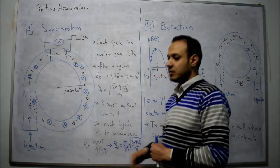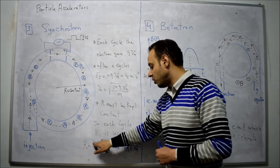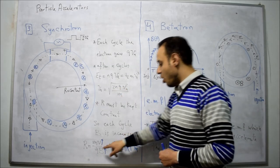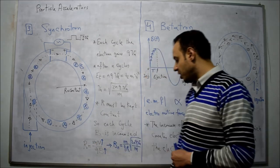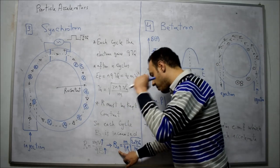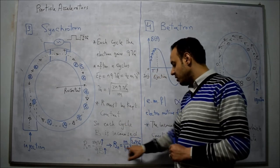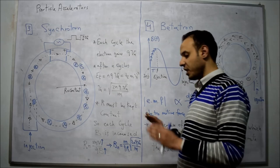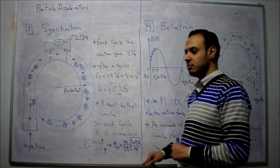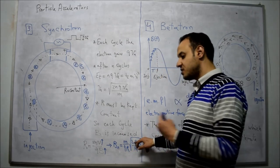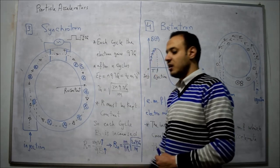In each cycle, I should also increase B. For example, after N cycles, V equals the square root of 2N×Q×Va over M. So R equals M times that velocity, over QB. Solving for B at cycle number N: B = (1/QR) × sqrt(2N×Q×Va / M). At cycle 1, B = (M/QR)×sqrt(2QVa/M). At cycle 2, B must be larger by factor sqrt(2), then sqrt(3) at cycle 3, sqrt(4) at cycle 4, and so on. By increasing B proportionally, the increase in V is cancelled and R is kept constant.